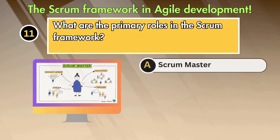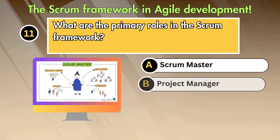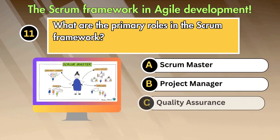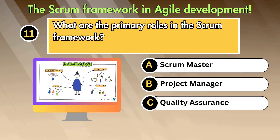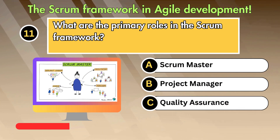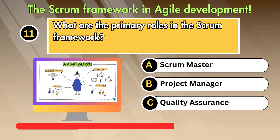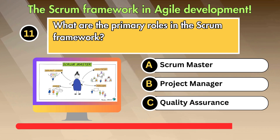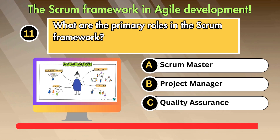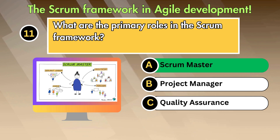What are the primary roles in the Scrum framework? Option 1: Scrum Master. Option 2: Project Manager. Option 3: Quality Assurance. Answer is Scrum Master.